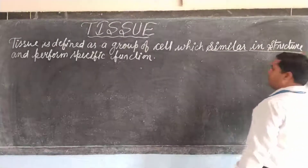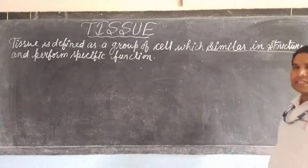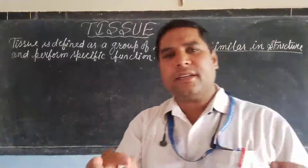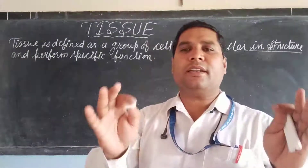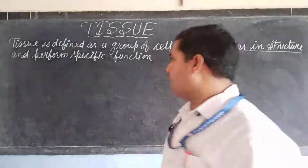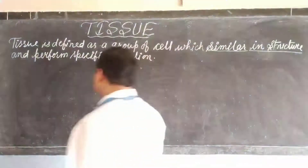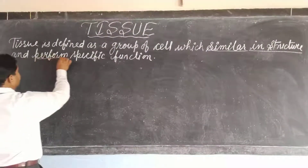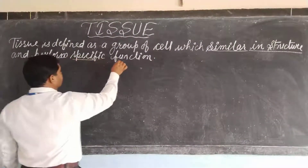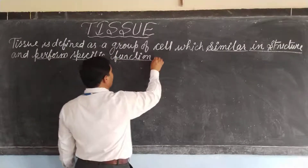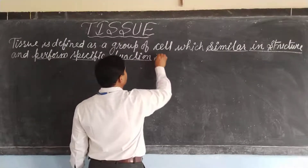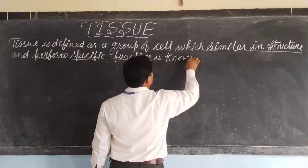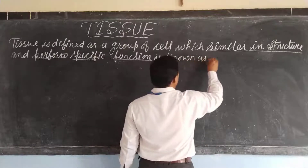All the cells in a group are of the same shape and size, and they perform a specific function — that is known as tissue.